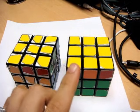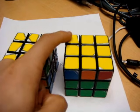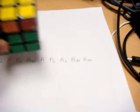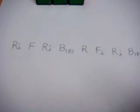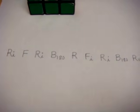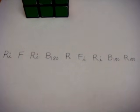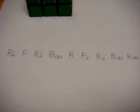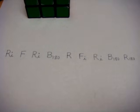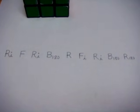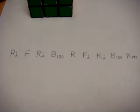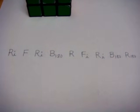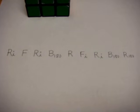What this step is going to do is reposition these four top corner pieces so that they're in the correct orientation. The algorithm we're going to use is: right counterclockwise, front clockwise, right counterclockwise, back 180, right clockwise, front counterclockwise, right counterclockwise, back 180, and right 180. It's a relatively longer algorithm than previous steps, so it might be a good idea to write it down or pause and rewind the video to watch closely as I go through the steps on the actual cubes.